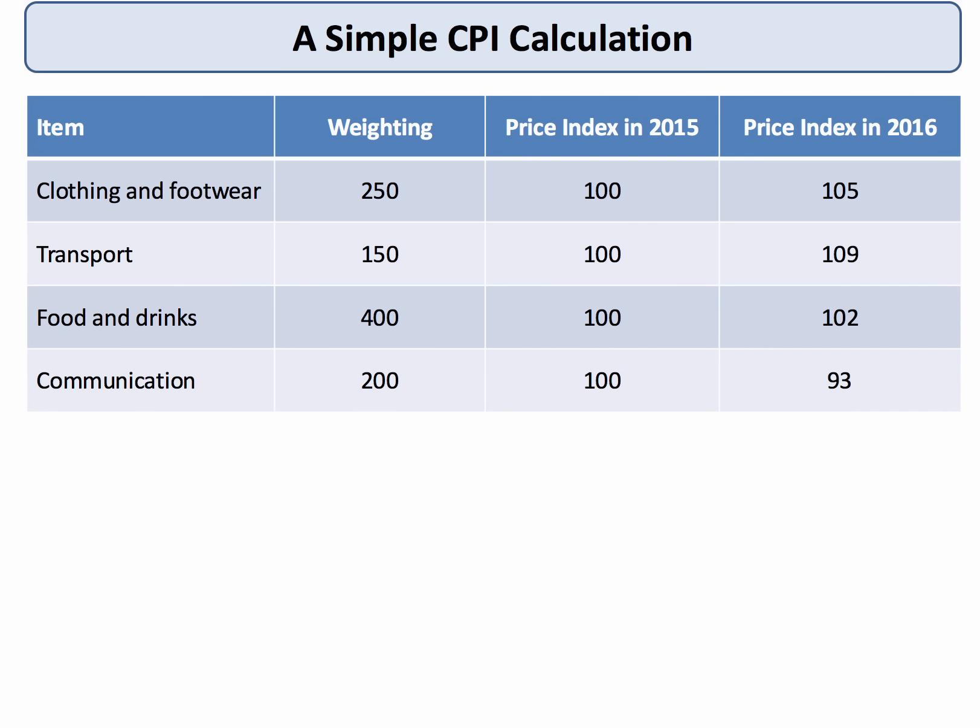Now let's work through a simple CPI calculation. To make things easier to understand, I'm going to calculate a CPI using just four items of spending, so the weightings will add up to a thousand — in other words, all spending goes on these four items. I've allocated a weighting of 400 to food and drinks, suggesting households spend a greater percentage of income there compared to the other three. Transport is the least heavily weighted item. I'll take 2015 as my base year, allocating an index number of 100 to average prices in that year. On the right you can see the price index in 2016 for the four items.